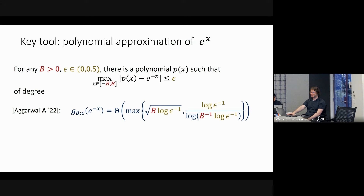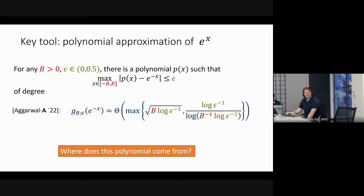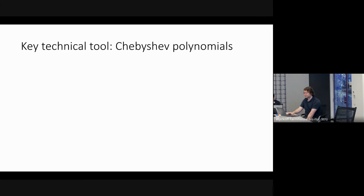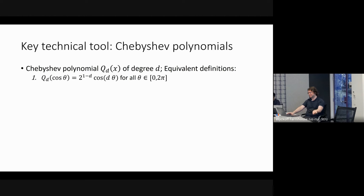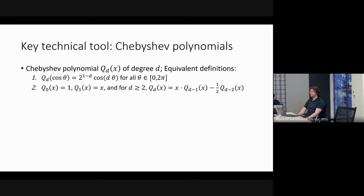Let me return to the polynomial approximation, since it's the main technical tool. The key idea is to use Chebyshev polynomials. For each degree D, there's a degree-D Chebyshev polynomial Q_D, defined so that when you plug in cos(θ), you get a rescaled cos(D·θ). This can equivalently be defined recursively. Between -1 and 1, Chebyshev polynomials wiggle between -1 and 1; outside that interval, they grow quickly like a polynomial.